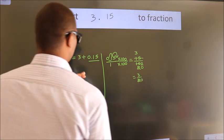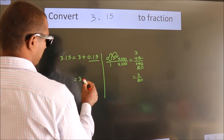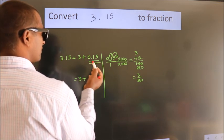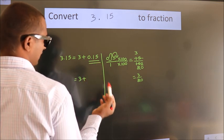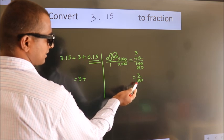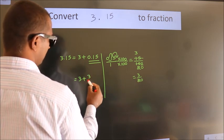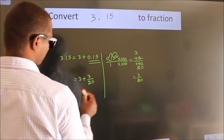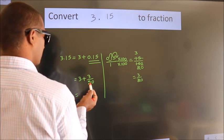Now, 3 plus, in place of 0.15, we write the fraction 3/20. So 3 plus 3/20.